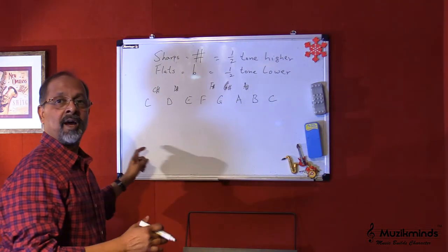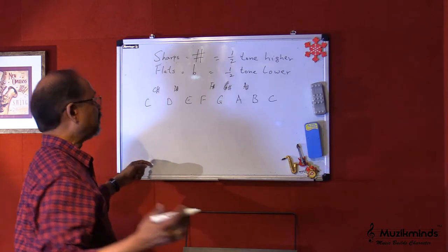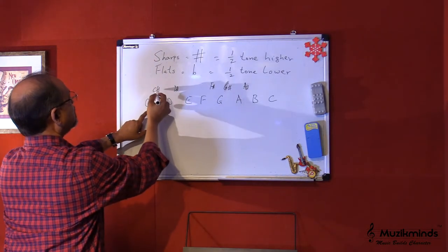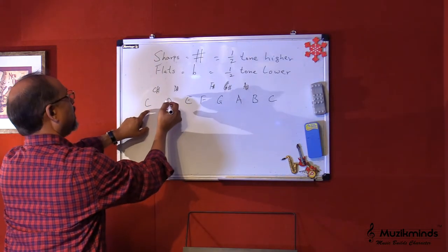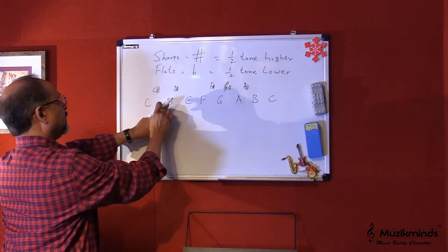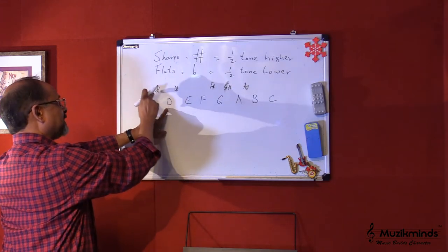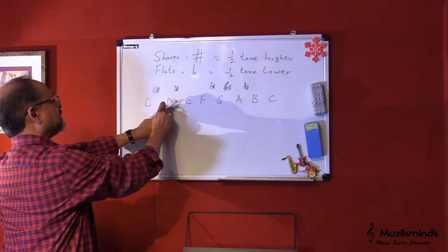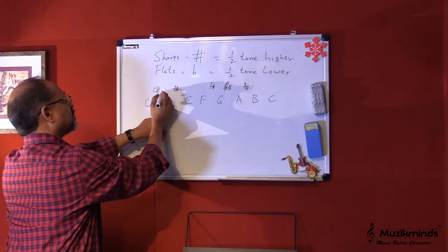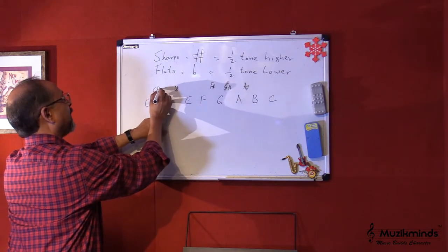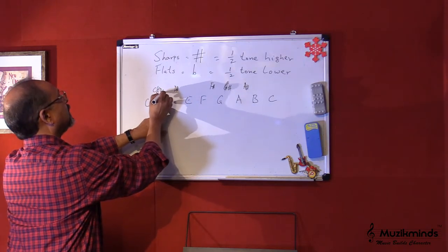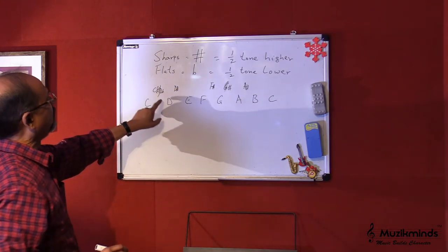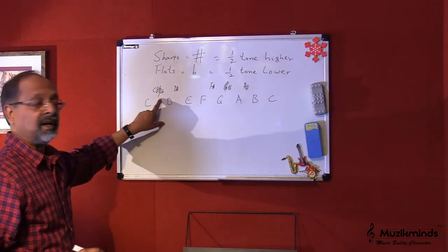We also call the half tone a semitone. So here there is a semitone higher, which is a C sharp. Now for this note, which is D, this is actually also a D flat. So we can either call it a C sharp or we can call it a D flat.